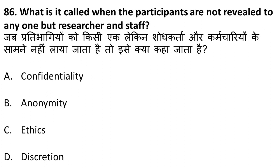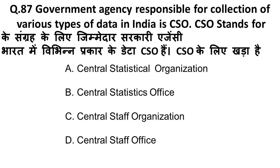Next question: what is it called when participants' identity is known to the researcher and staff but is not revealed to anyone else? Here, the researcher and staff know the participants' identity, but the final users of the report do not. This is called confidentiality. Remember: when researcher and staff know but others don't, it is confidentiality.